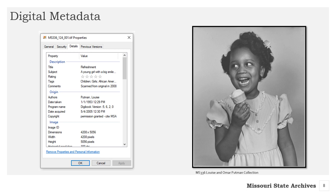As we mentioned in the previous module, metadata for digital photographs can be part of the digital file itself, like what you see here. It's still a good idea to create an index for your digital photos too. Everything is pretty much the same as for analog formats, except in the location column you should put the file name, and in the format field you may put the resolution and/or file type.